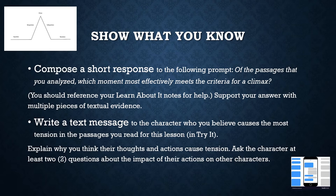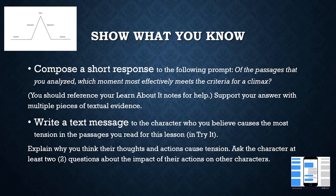To show what you know, you have two options. You can compose a short response to the following prompt: of the passages you analyzed, which moment most effectively meets the criteria for a climax? Reference your notes from Learn About It for help, and support your answer with multiple pieces of textual evidence. Another option is to write a text message to the character you believe causes the most tension, explain why their thoughts and actions cause tension, and ask at least two questions about the impact of their actions on other characters. I hope this lesson helped you analyze the climax. Make sure you check out the extra resources if you need extra help. See you next time.